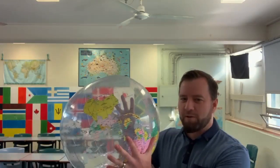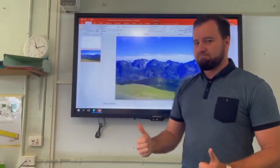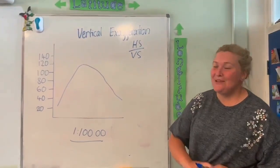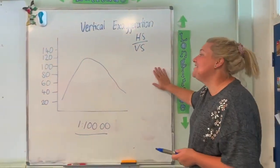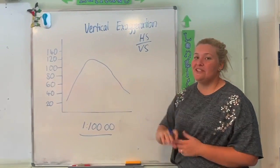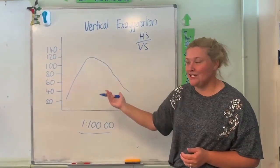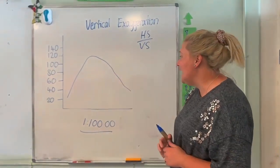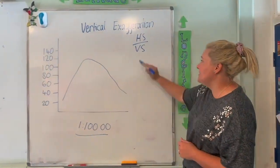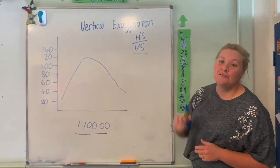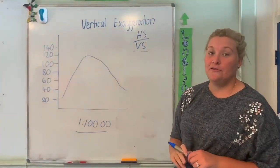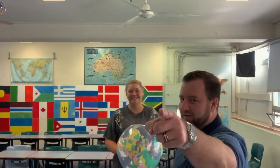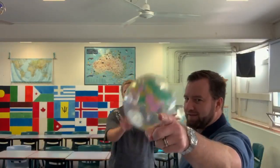Hi guys, I'm Mr Sizzio and welcome to Geography Explained. So we have a vertical exaggeration question here, which is a fake cross section that we've created. And we're going to use this equation here — horizontal scale over vertical scale.